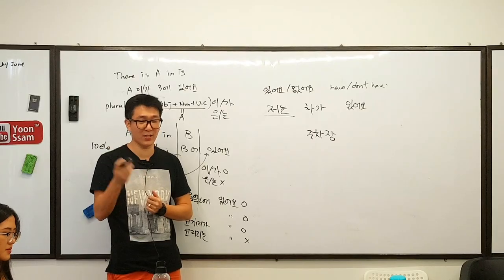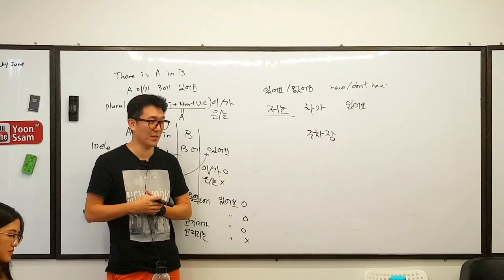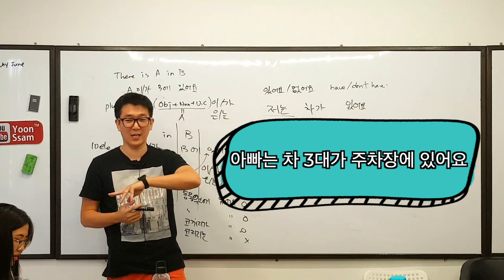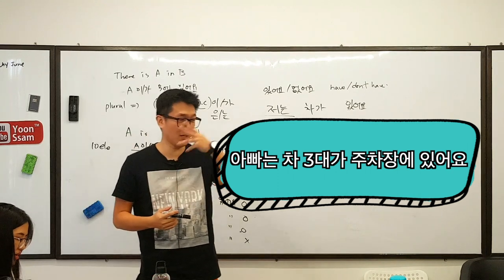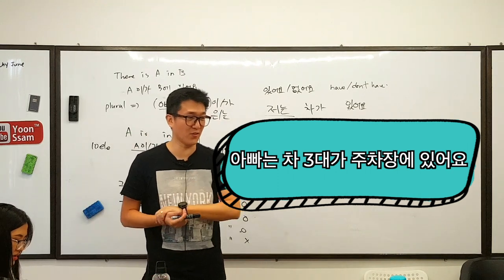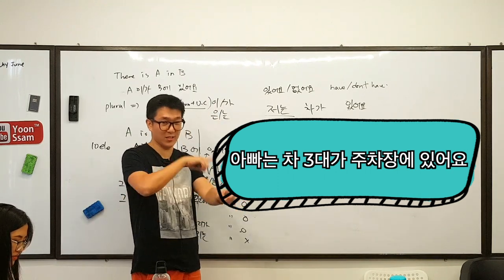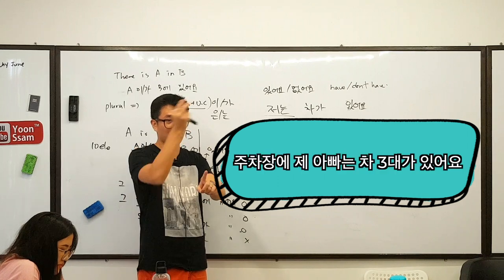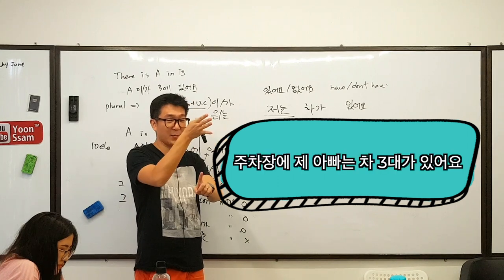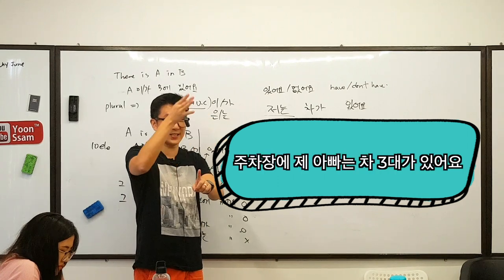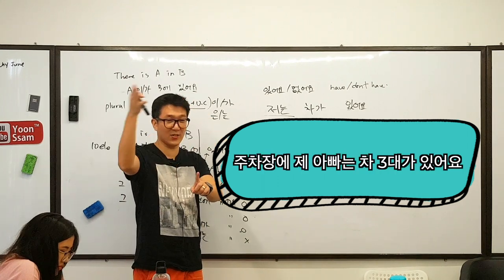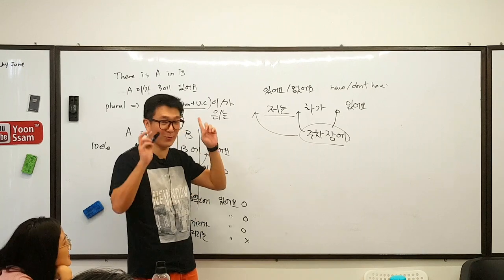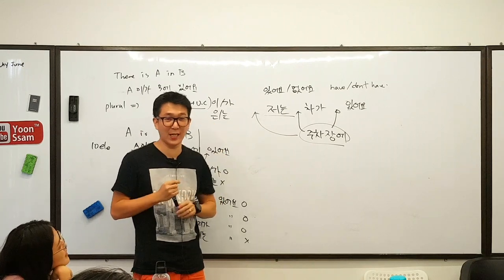'My dad has three cars in the car park': 아빠는 차 세 대가 주차장에 있어요. We can also rearrange it — 주차장에 제 아빠는 차 세 대가 있어요 — also fine.